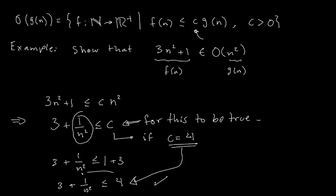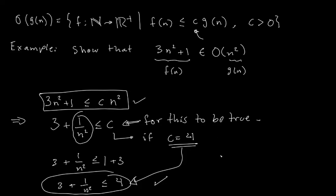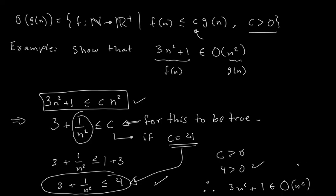Since the condition is satisfied for c = 4, and the only requirement is that c > 0 — and clearly 4 > 0 — we can safely say that 3n² + 1 is in big O of n². The idea is: we write the inequality, try to find the value of c that makes the condition true, and if that value is greater than zero, then f(n) is in big O of g(n).